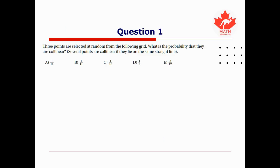For question one, we're told that three points are selected at random from the following grid that you should see on the right side of the screen. What is the probability that they are collinear? Remember that three points being collinear means they lie on the same straight line. The probability that any three randomly chosen points are collinear is just the total number of ways to choose three points that are collinear divided by the total number of ways to choose three points in general out of the 12.